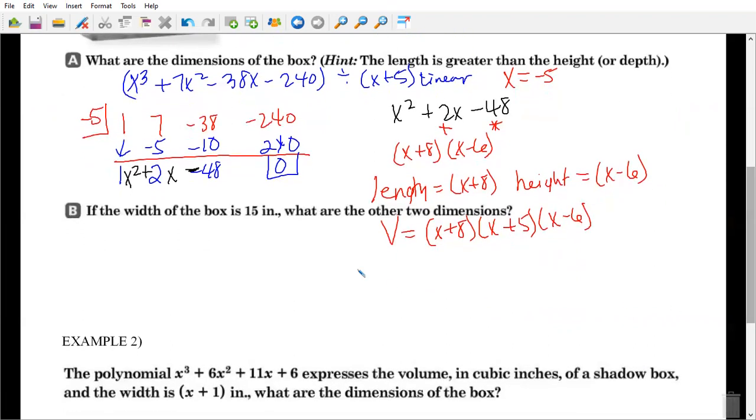Part B, it says if the width of the box is 15 inches, what are the other two dimensions? So remember our width equaled x plus 5. If I now know what it's equal to, I can solve for x, right? So what does x have to be? So x equals 10.